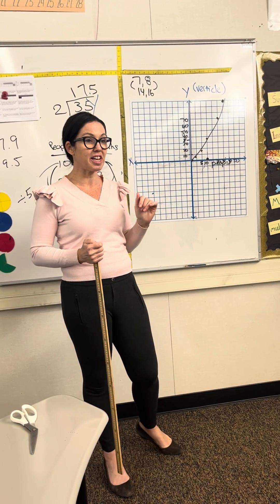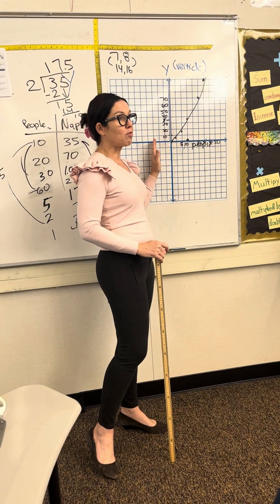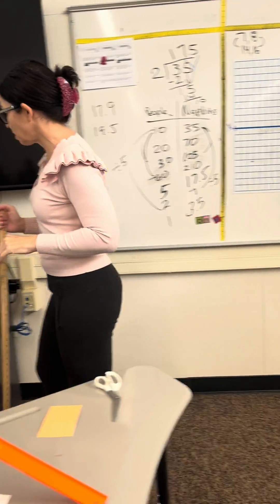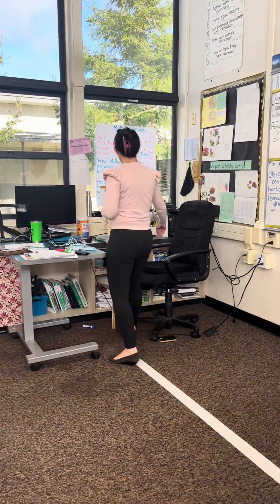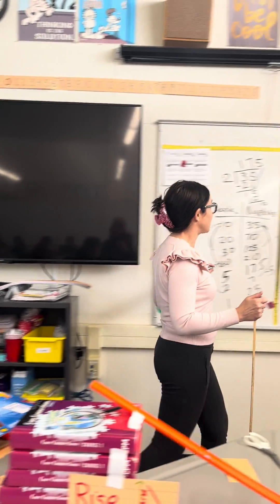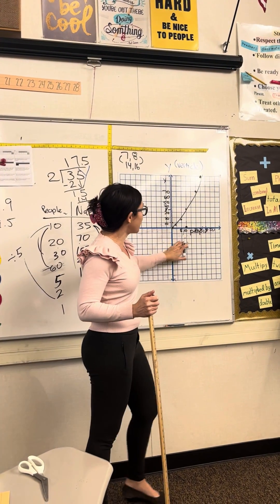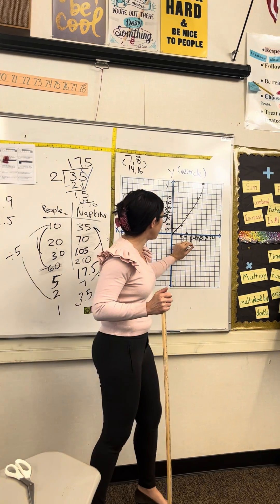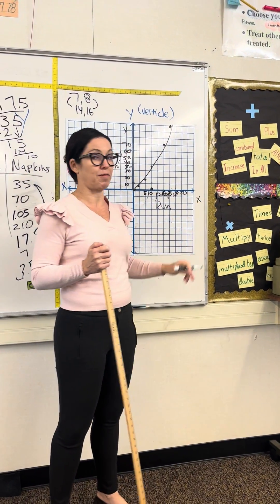Who agrees with Kimmy? Betsy, can you add on to that? I agree. Awesome. So, Aubrey, the rise again is the vertical. The rise is the vertical — the y-axis, the vertical. See here? This is the rise right here, and the run, which is the x-axis. Thumbs up if you agree.